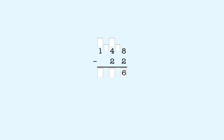Next, the tens place. 4 tens minus 2 tens is 2 tens, so we put 2 in the tens place in the answer. Last, the hundreds place. There's nothing to subtract from 1, so we bring down the 1. So 148 minus 22 is 126.